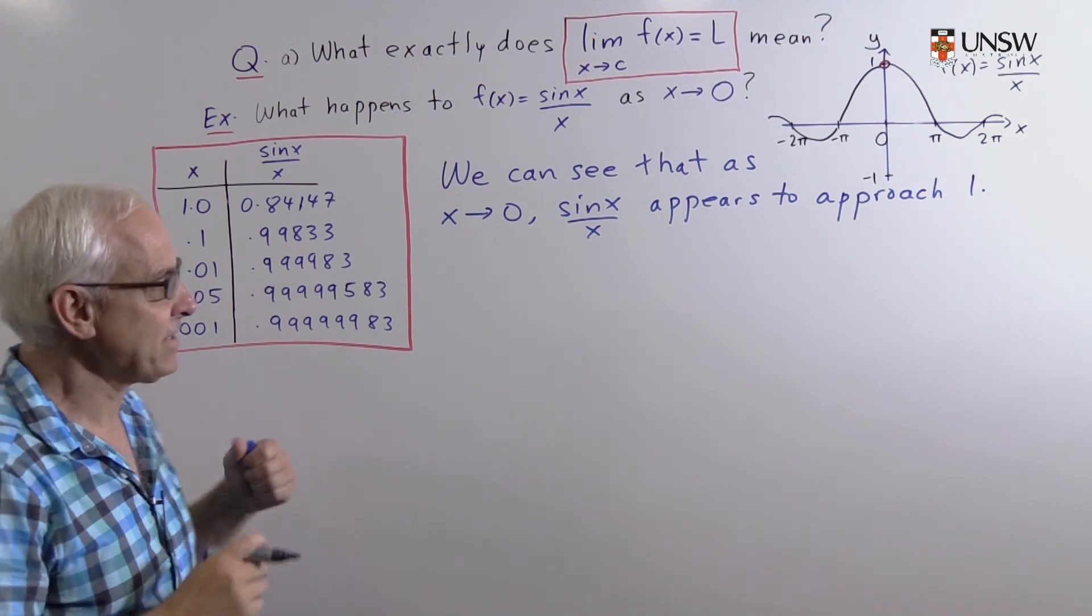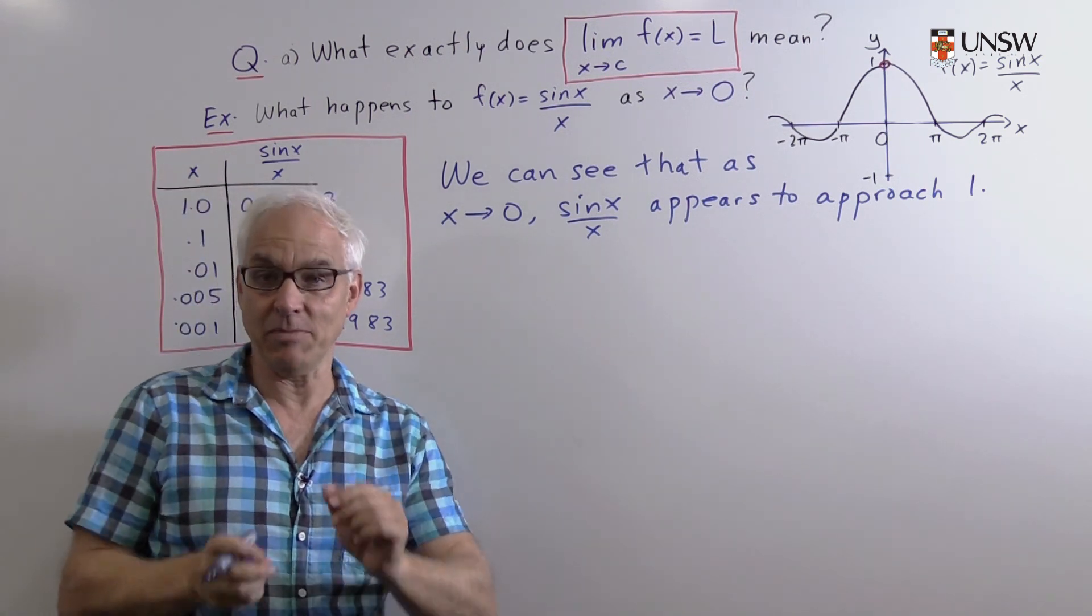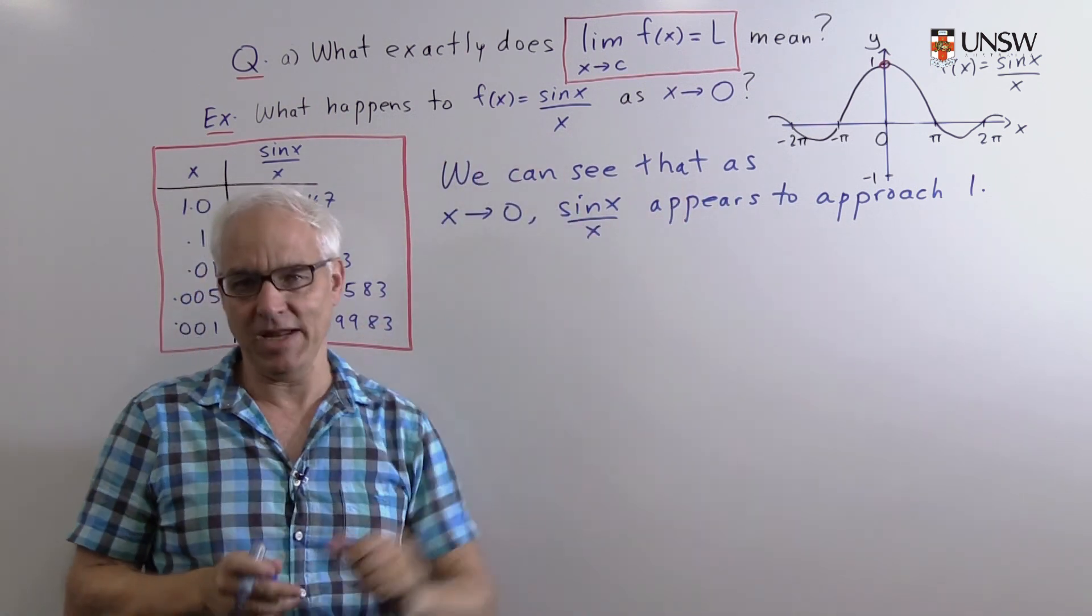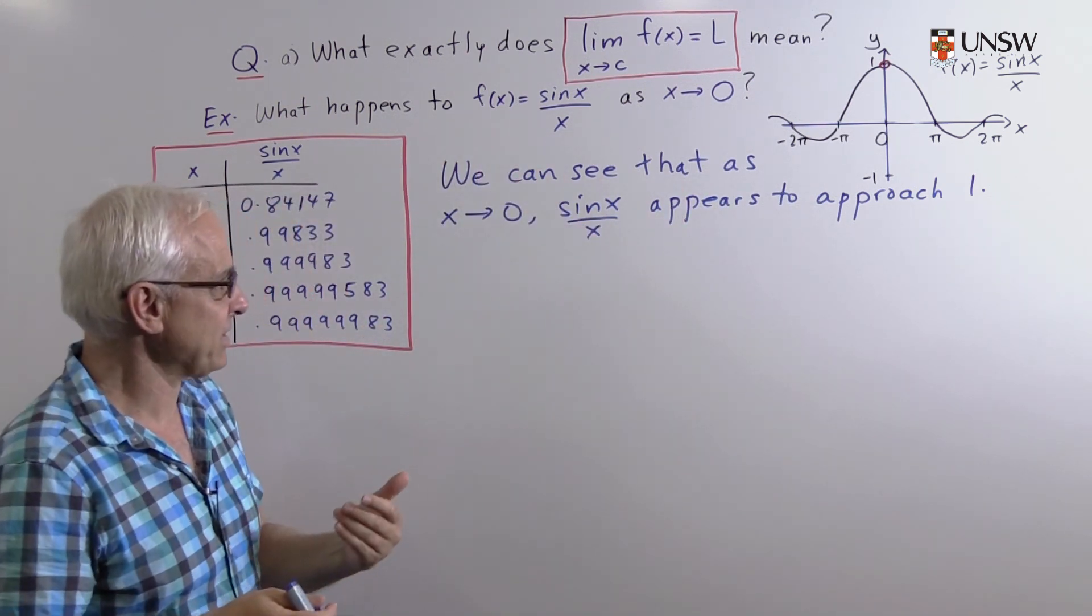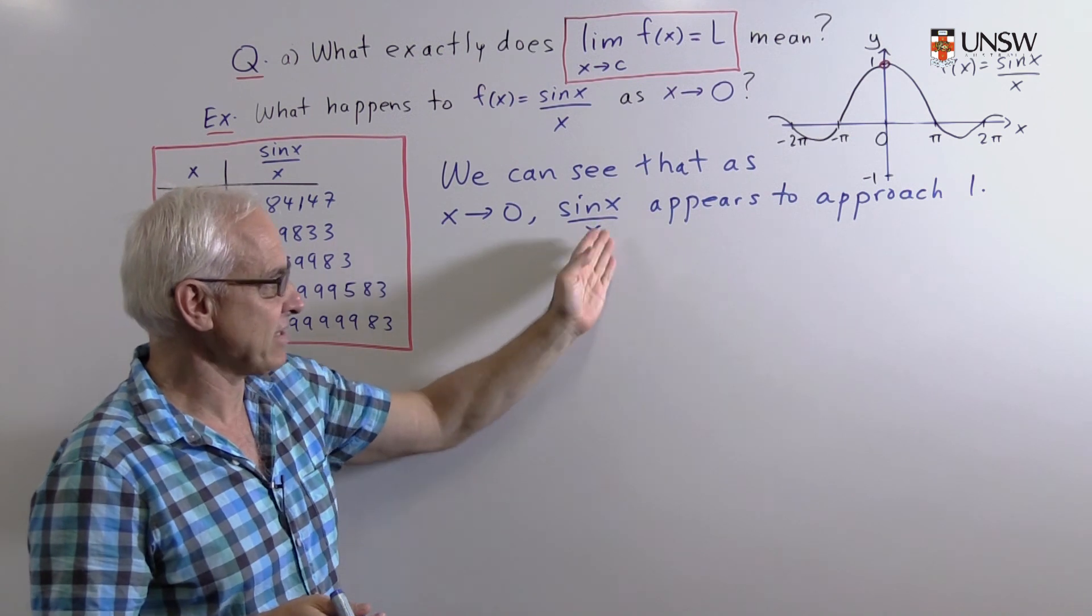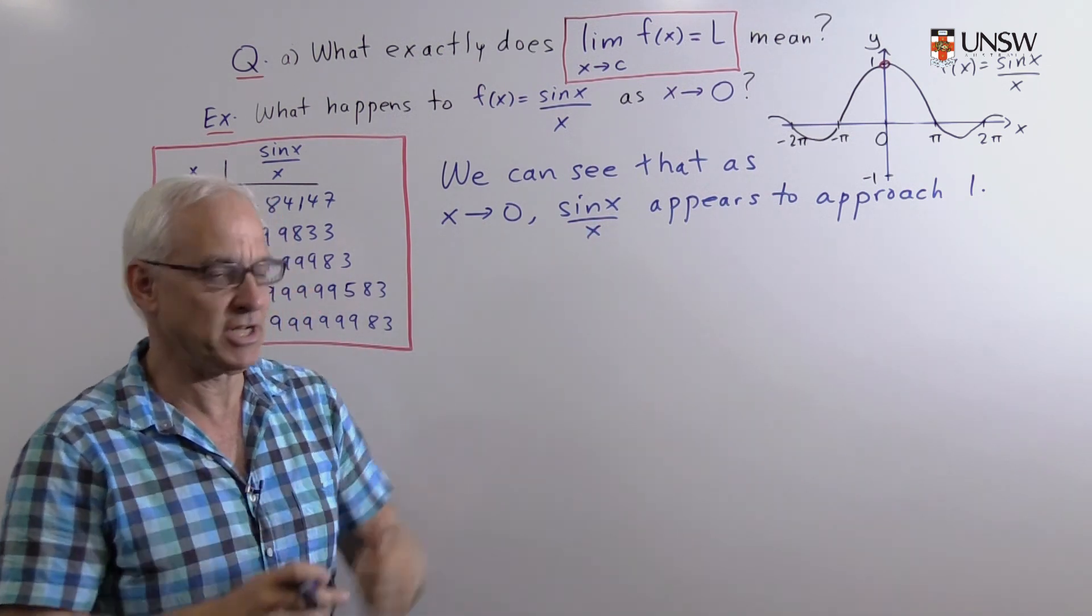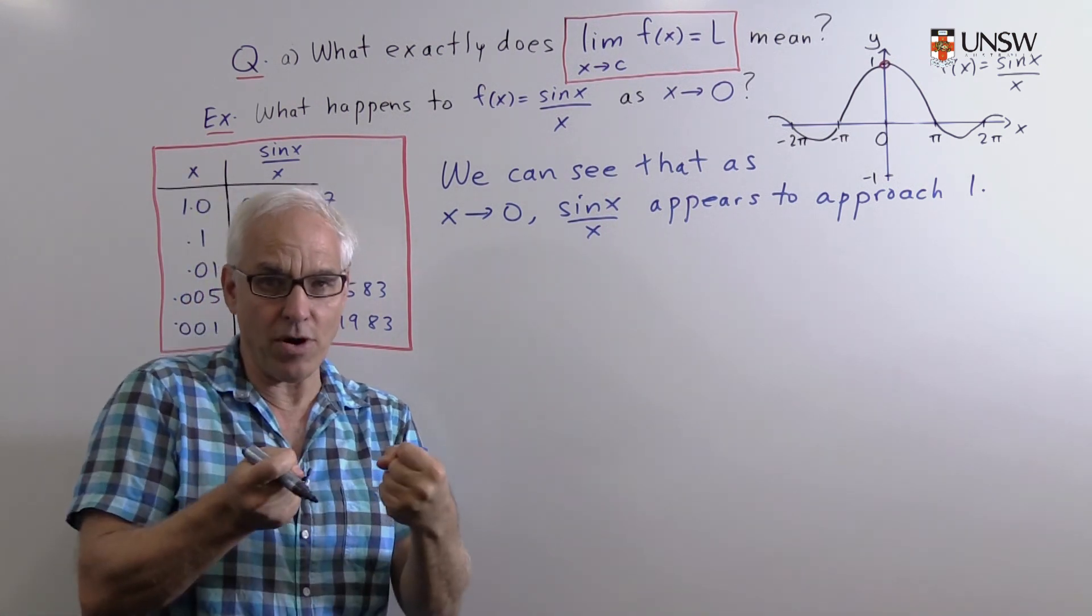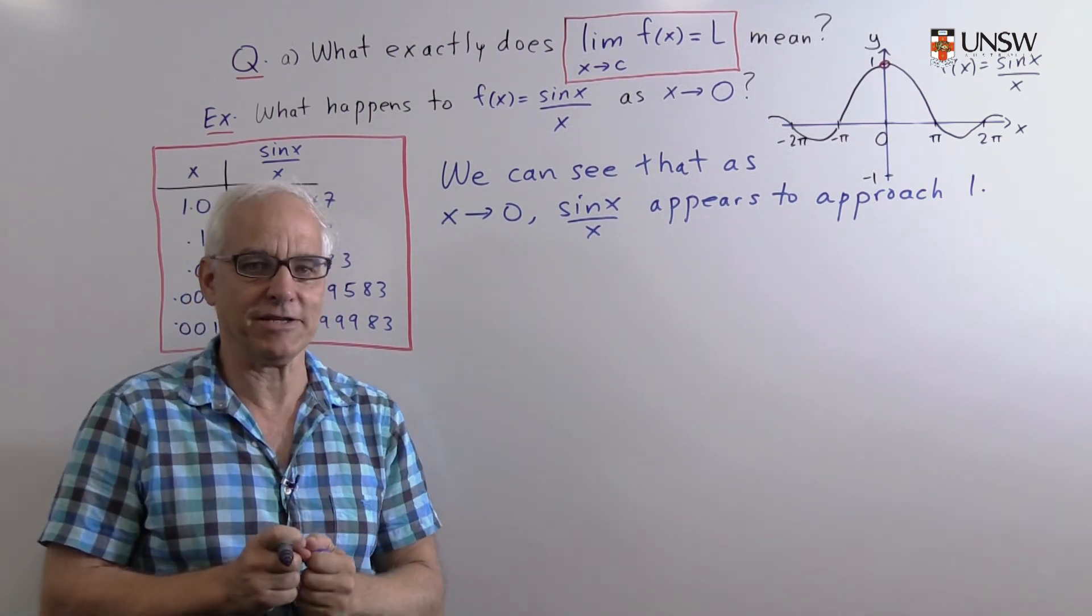Now in the 19th century it became clear that we need to be a little bit more precise about what actually this statement means. What does it mean when we say that sine x over x approaches a particular value as x approaches another value? Can we make that more concrete, more precise?